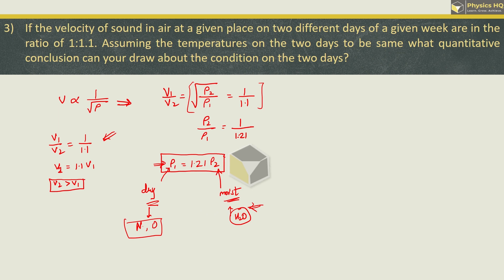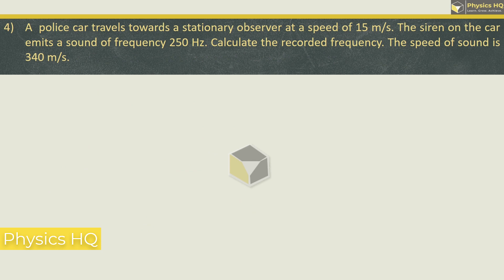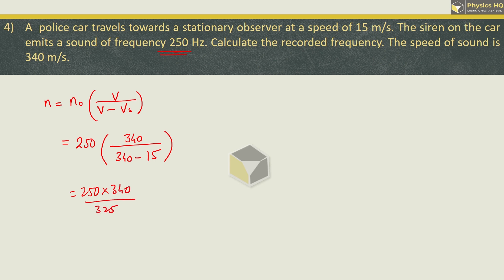A police car travels towards a stationary observer at a speed of 15 meter per second. The siren on the car emits a sound of frequency 250 hertz. Calculate the recorded frequency. The speed of sound is 340 meter per second. So the apparent frequency will be equal to the actual frequency into speed of sound divided by speed of sound minus the speed of source. Source ka frequency is 250, speed of sound is 340 divided by 340 minus 15. So you get 250 into 340 divided by 325, which gives 261.84 hertz. Hope you all understood this.